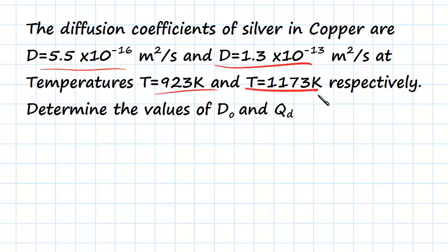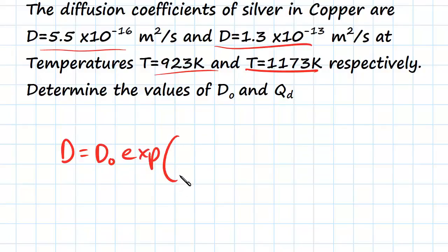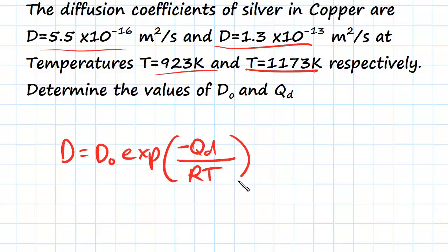We haven't already talked much about D₀. In the previous video we went over the formula, and just to write that down here so we have it — the formula is that D equals D₀ times the exponential of negative Qd, which is the activation energy, over R times T.